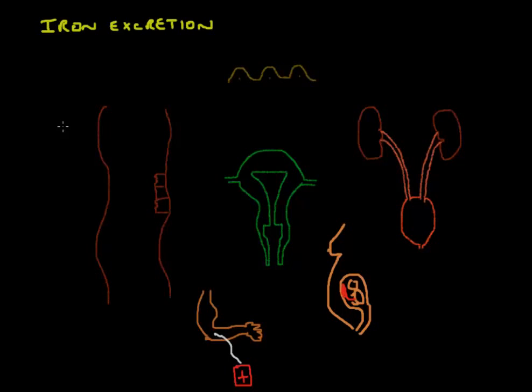So let's start with the gastrointestinal tract right here, GIT, gastrointestinal tract. In our diet we usually take in about 10 to 20 milligrams of iron per day, and of this iron that we take in, about 1 to 2 milligrams will be absorbed.